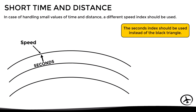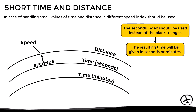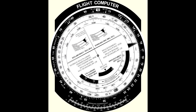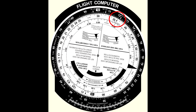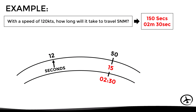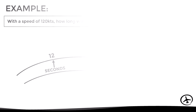For small values, the seconds index on the middle scale should be used instead of the black triangle. The resulting time will be in seconds on the middle scale and in minutes on the inner scale. For example, with a speed of 120 knots, how long will it take to travel 5 nautical miles? We align the seconds index with 12 (representing 120 knots) on the outer scale, then look for 50 (representing 5 miles). The results are 150 seconds or 2 minutes and 30 seconds.